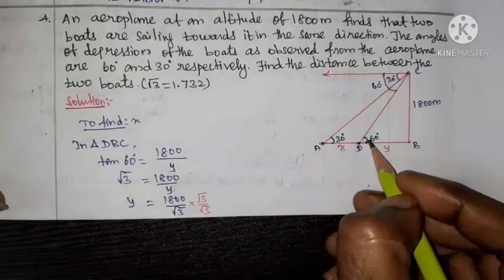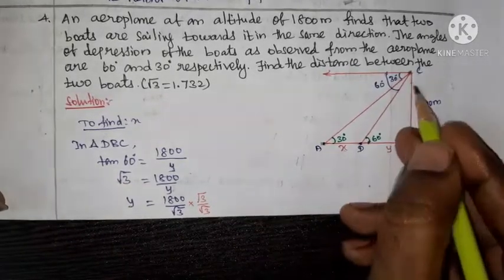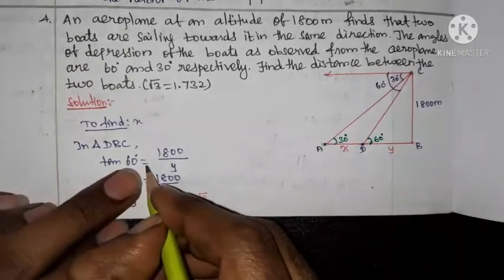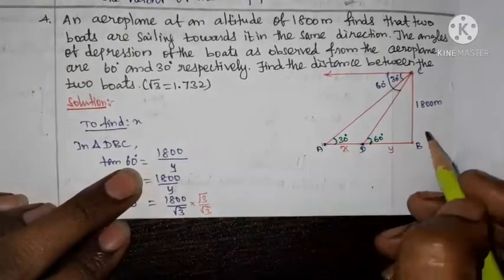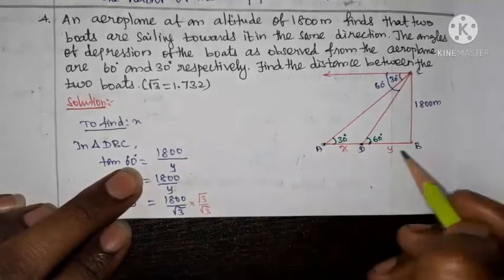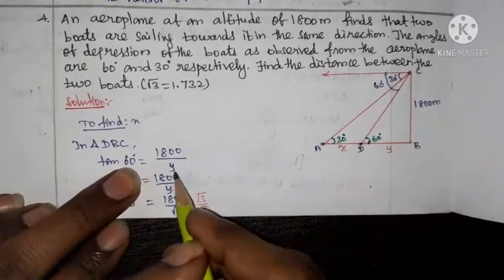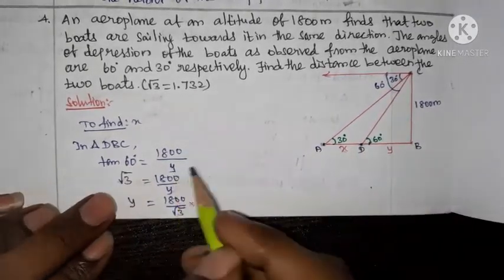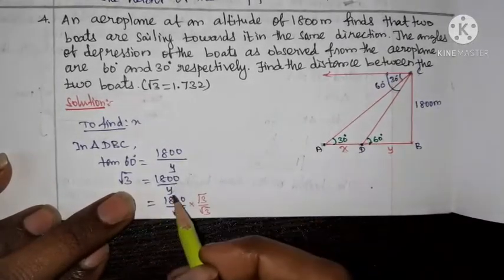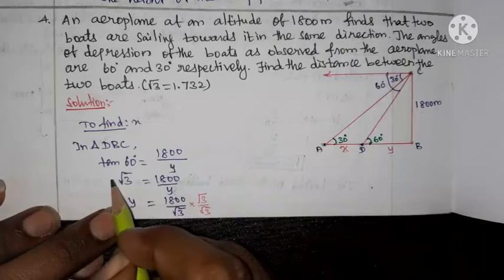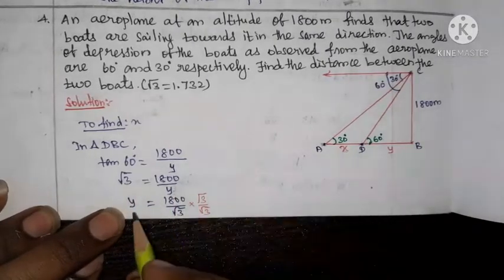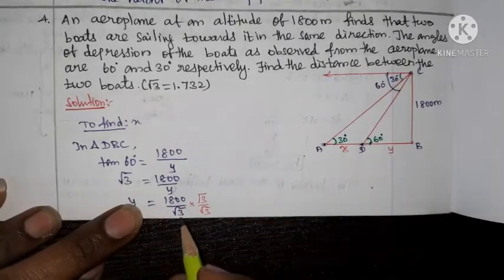In triangle DBC, tan 60 degrees equals opposite over adjacent, which is 1800 divided by y. So tan 60 equals root 3, giving root 3 equal to 1800 by y. Therefore y equals 1800 by root 3.